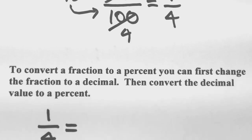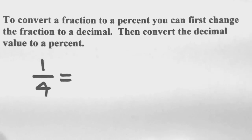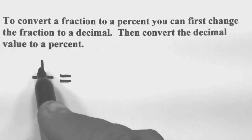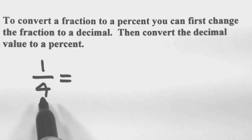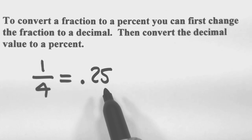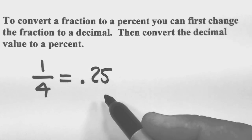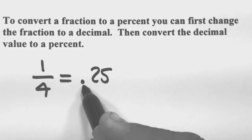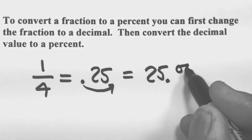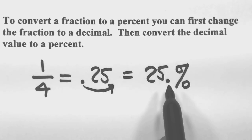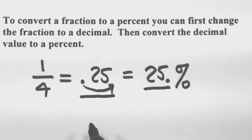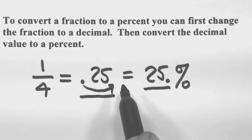Now let's go the other way — convert a fraction to a percent. First, change the fraction to a decimal. Take one-fourth, which is one divided by four, equal to 0.25. To convert a decimal to a percent, move the decimal point two places to the right, because the decimal value is the smaller-looking number. So 0.25 becomes 25%, since the larger-looking number must be in front of the percent sign.